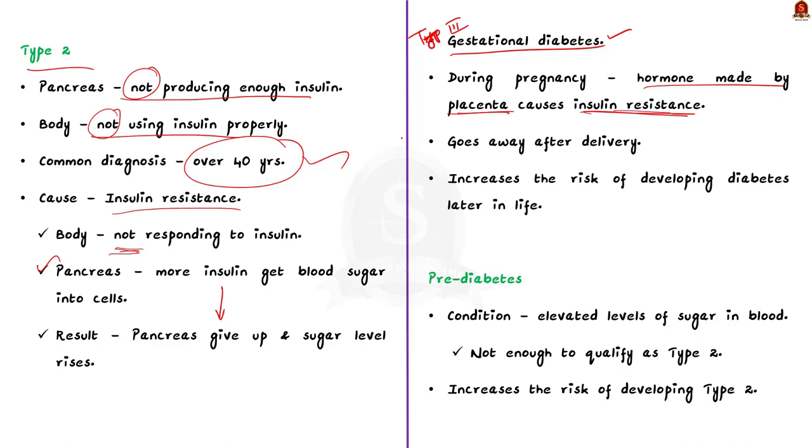Finally, pre-diabetes. Technically, it is not a distinct type of diabetes. It is a condition where a person has elevated blood sugar levels that aren't high enough to qualify as type 2 diabetes.